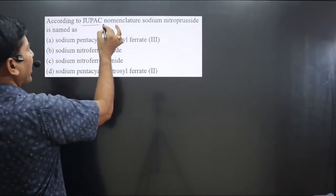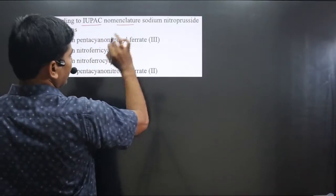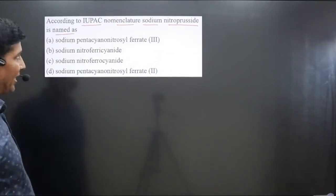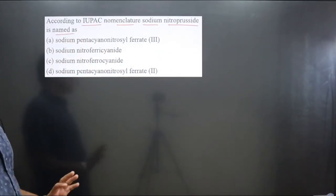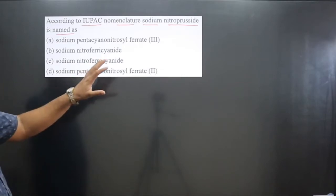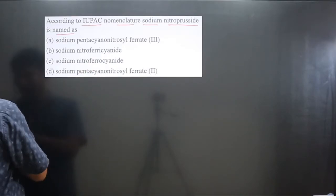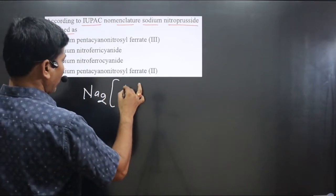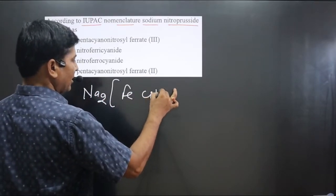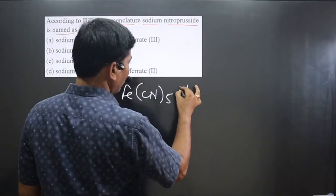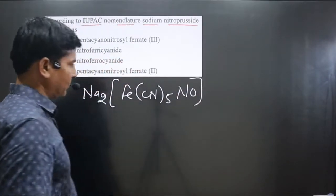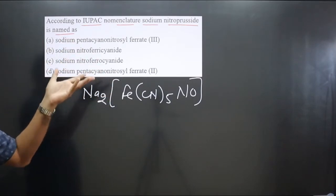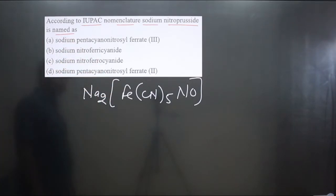The question asks for the IUPAC nomenclature of sodium nitroprusside, which is a common name. The chemical formula of sodium nitroprusside is Na₂[Fe(CN)₅NO]. For this complex, we can do the naming according to IUPAC and then answer this question.